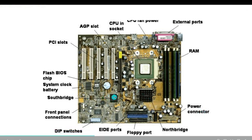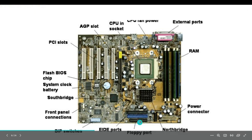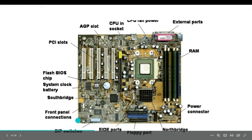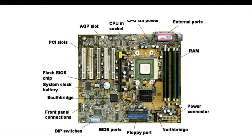This is the Northbridge and the Southbridge — the two chips in the CoreLogic chipset on the motherboard. Typically, the Southbridge implements the slower capabilities, while the Northbridge, also known as the host bridge or memory controller, is responsible for tasks requiring the highest performance. This is the floppy port, also known as the floppy disk controller — a special purpose chip which controls and directs reading from and writing to a computer's floppy disk drive. These are EIDE ports. These are the DIP switches — a manual electric switch packed with others in a standard dual inline package, usually used to customize the behavior of an electronic device for specific situations.